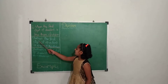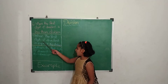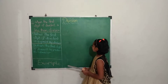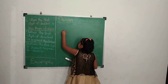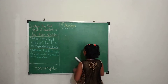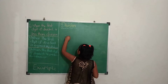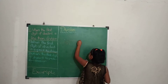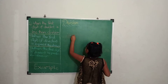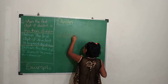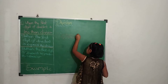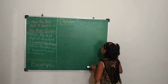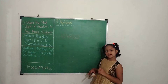Now the second type: when the first digit of the dividend is equal to the divisor. Our example is 6552 divided by 6. We will write the table of 6 to divide the numbers.